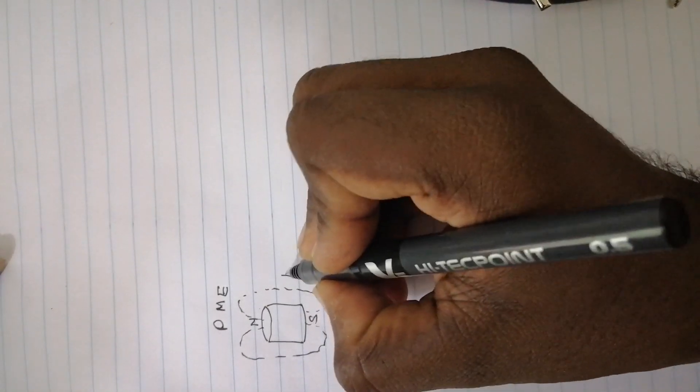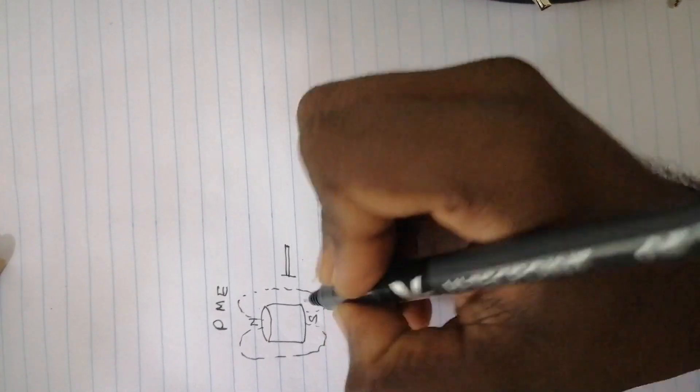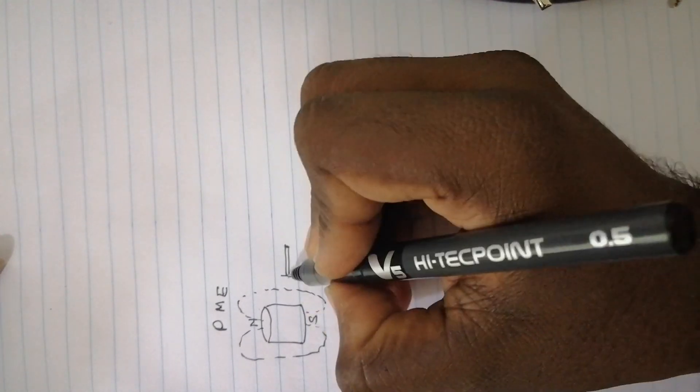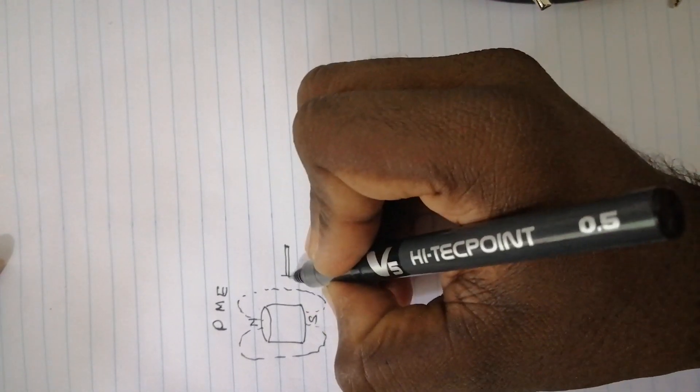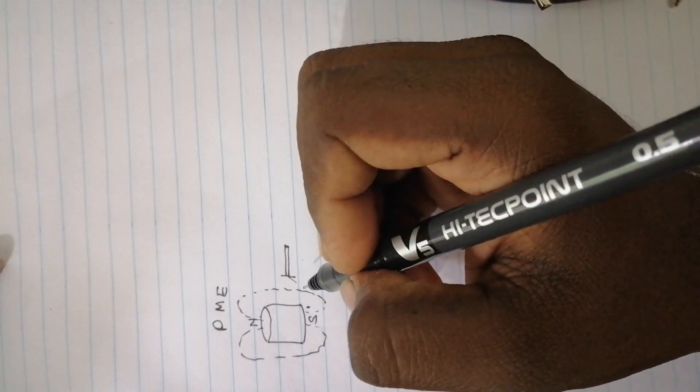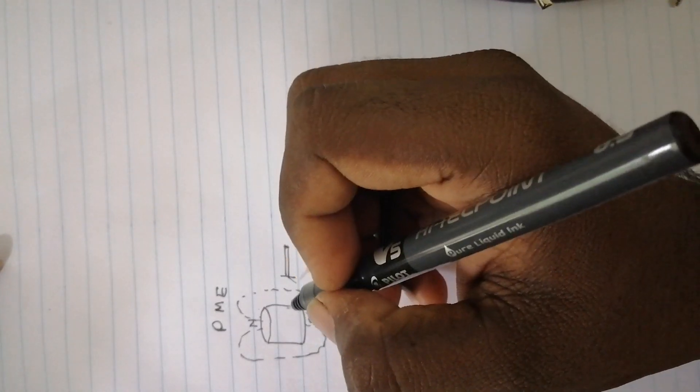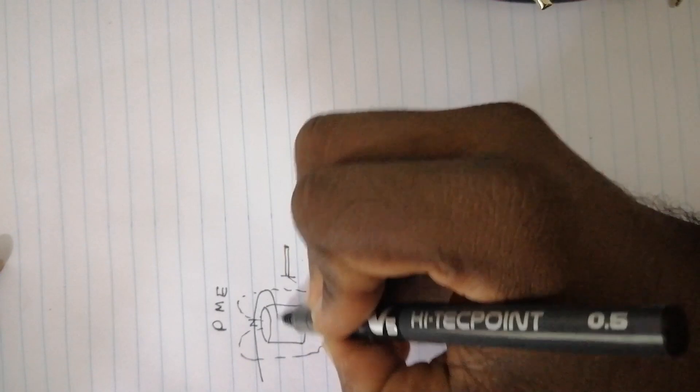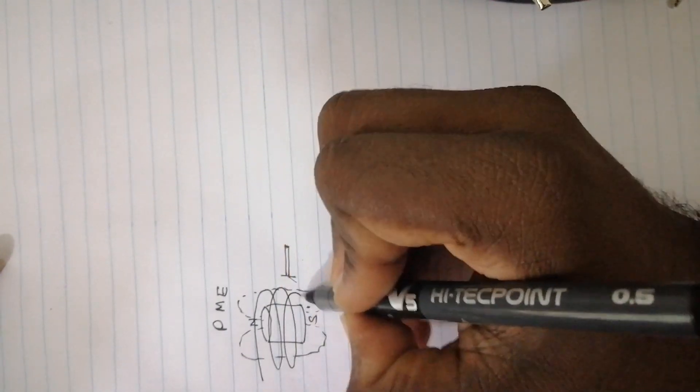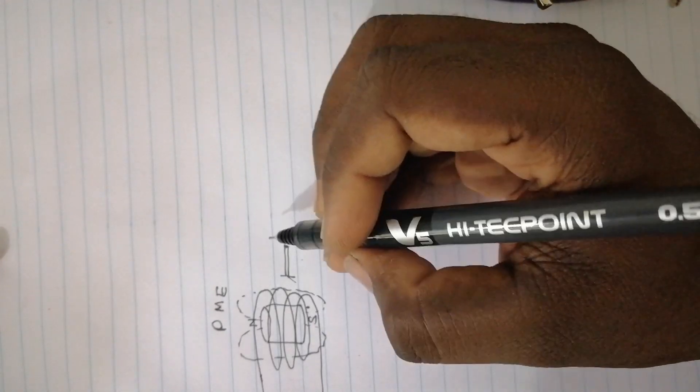If you bring a metallic object like a nail or something close to this one, this nail will go and attach with one of these poles. And what I'm going to do is I'm going to wound a coil around this permanent magnet.